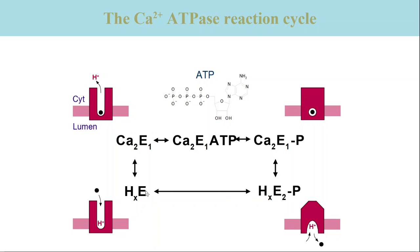In summary, one ATP molecule is hydrolyzed, two calcium ions are transported from the cytosol to the lumen, and two to three protons are transported in the opposite direction. I will illustrate the fingerprint approach with an example of our own research, where we have used the approach to map the ATP binding site of the ATPase. For that, we use derivatives of ATP to identify the important interactions of the ATP molecule with the substrate binding site of the ATPase.